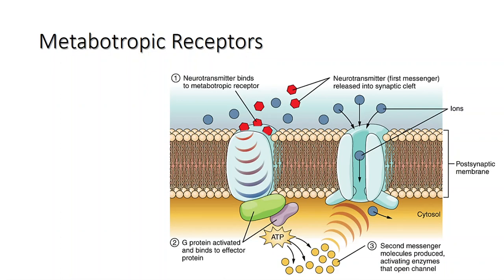Examples of metabotropic receptors include glutamate receptors, muscarinic acetylcholine receptors, GABA receptors, most serotonin receptors, adrenergic receptors, and receptors for histamine, dopamine, and neuropeptides. Activation of the post-synaptic cell by metabotropic receptors takes much longer, but the effects on the activity of the post-synaptic cell are prolonged and widespread.